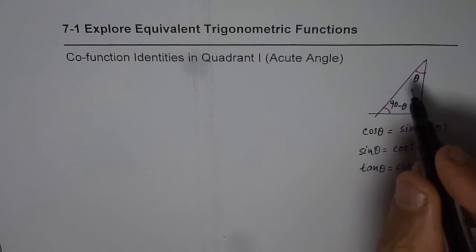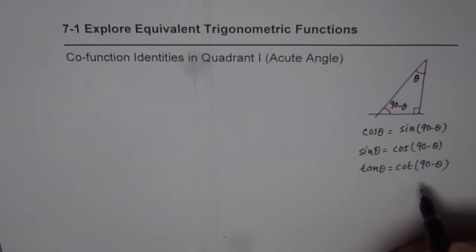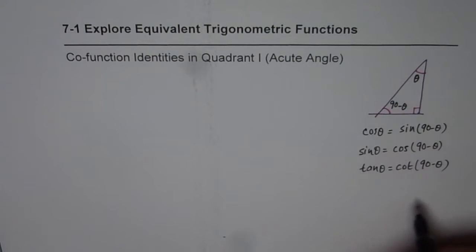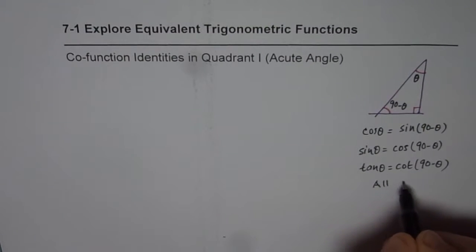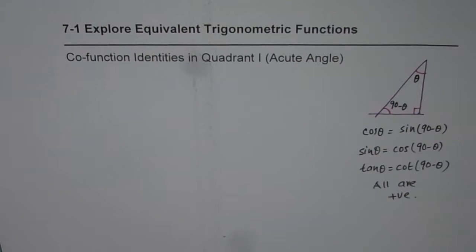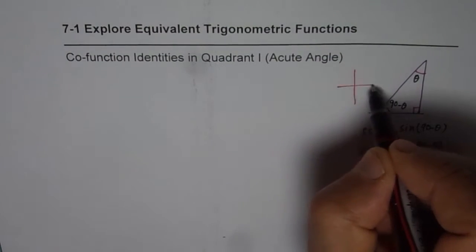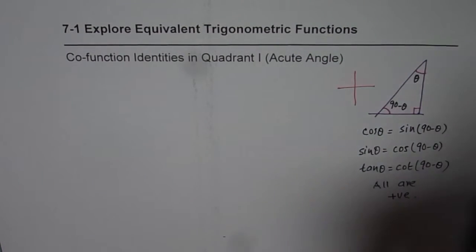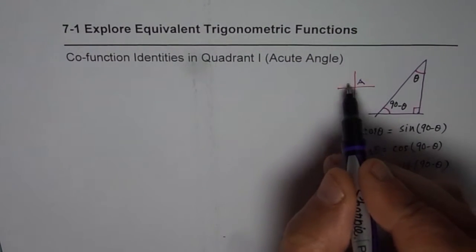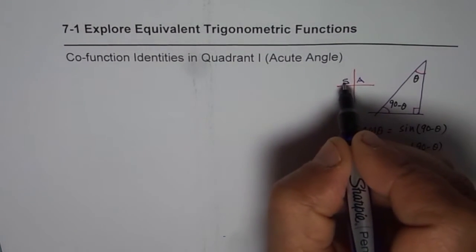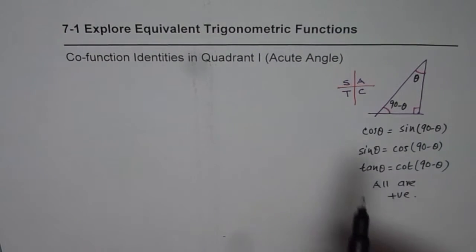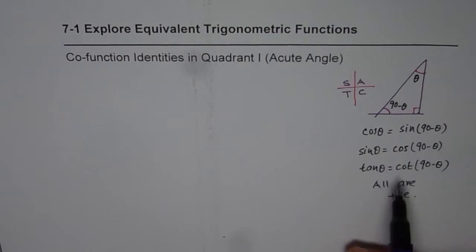And tan of theta will be equal to cotangent of 90 minus theta — that is what we call co-function identities. When we are considering acute angles, all these values are positive, which is why in the coordinate system we say 'all positive' in quadrant 1. In the next video, when the angle is more than 90 degrees, in quadrant 2 sine will be positive, quadrant 3 tan will be positive, and in quadrant 4 cos will be positive.